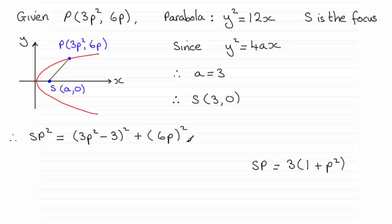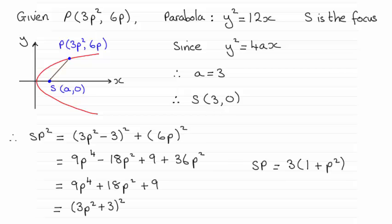And if you expand this out, you'll end up with 9p to the power 4 plus 18p squared plus 9, which then factorizes to all of 3p squared plus 3 all squared.